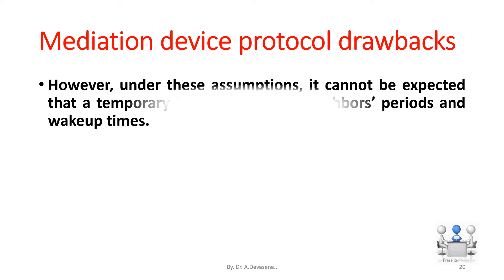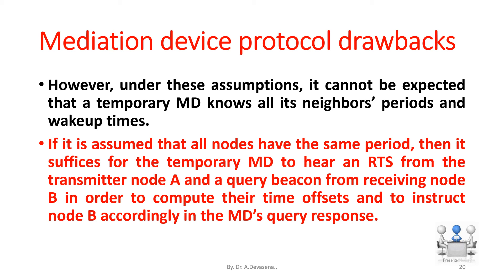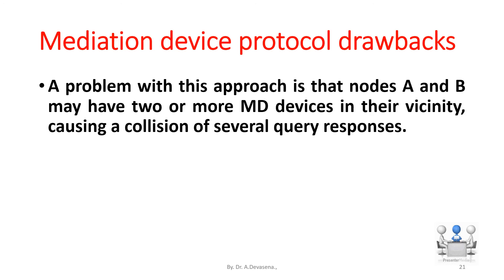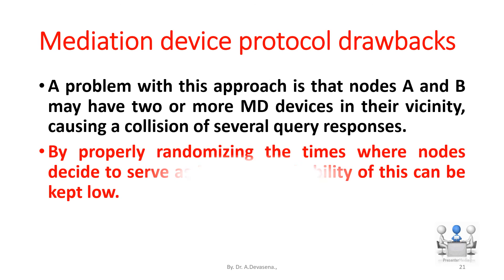Under these assumptions, it cannot be expected that a temporary MD knows all its neighbors' periods and wake-up times. If it is assumed that all nodes have the same period, then it suffices for the temporary MD to hear an RTS from transmitter node A and a query beacon from receiving node B in order to compute the timing offsets and to instruct node B accordingly in the MD's query response. A problem with this approach is that nodes A and B may have two or more MD devices in their vicinity, causing a collision of several query responses. By properly randomizing the times where nodes decide to serve as MD, the probability of this can be kept low.